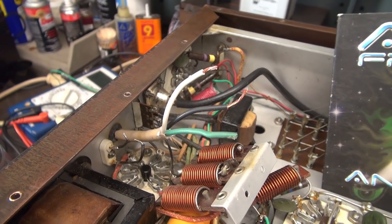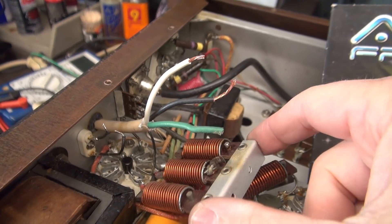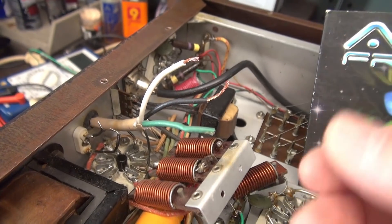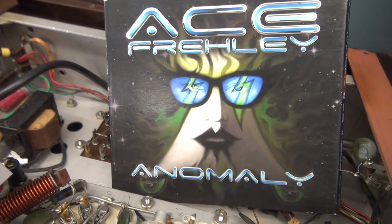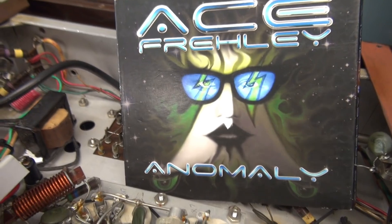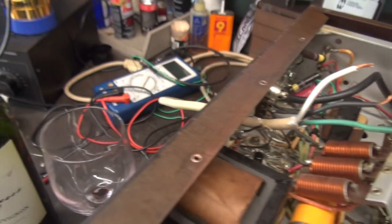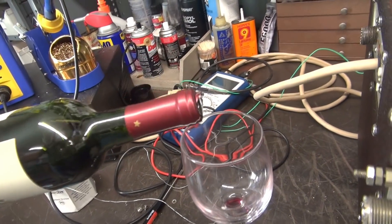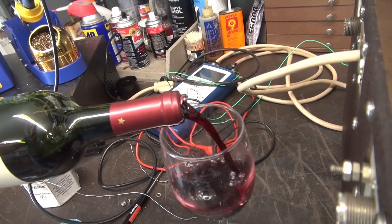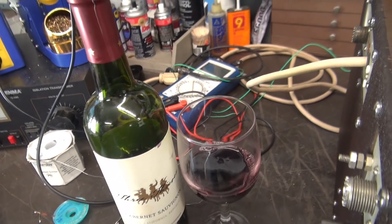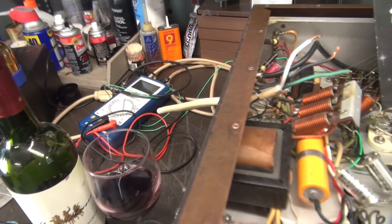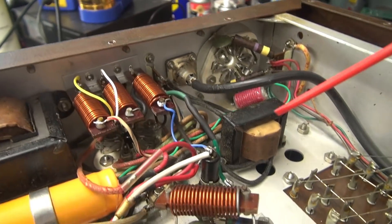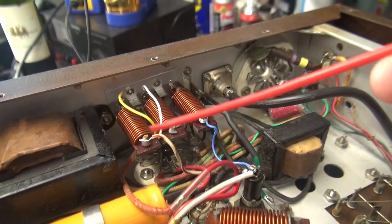So I'm getting ready to re-terminate the AC lines to these coils on the bottom side like they should have been without the butt splices. Music of the night, Ace Frehley's Anomaly, and the wine of the night is this nice cab by Three Thieves. Can't do that work without the wine. Look at that mess back there. I gotta clean up the shop. All right, let's get the AC terminated.